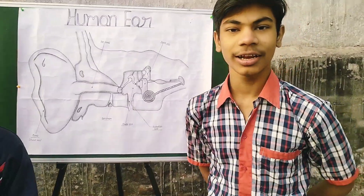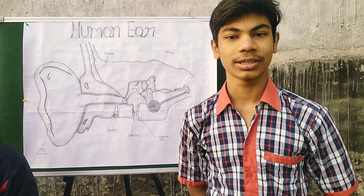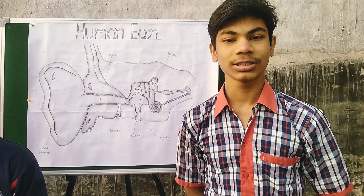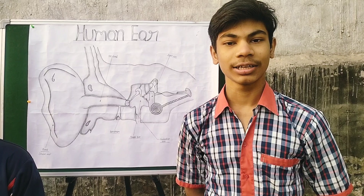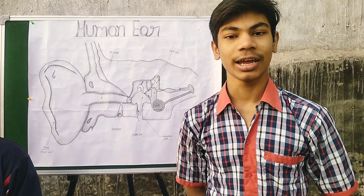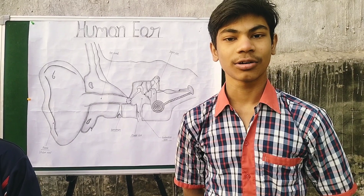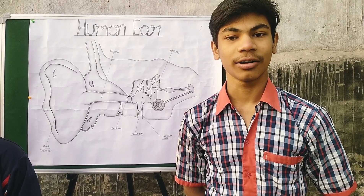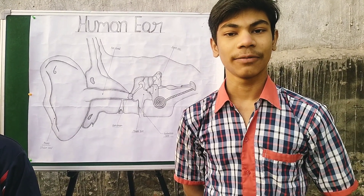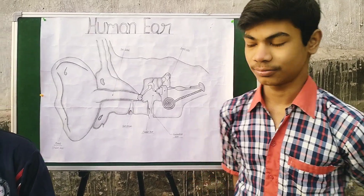Middle ear. The middle ear has the important job of converting sound waves into vibration. To do this, it has a thin membrane structure tightly stretched at the end of the ear canal. This is called the ear drum. When sound waves enter, they cause the ear drum to vibrate.